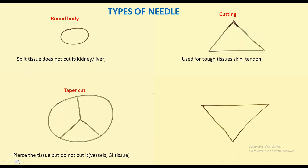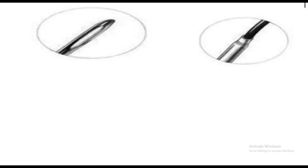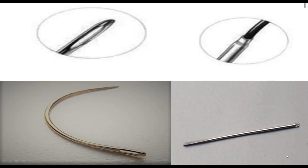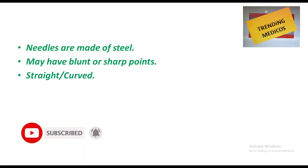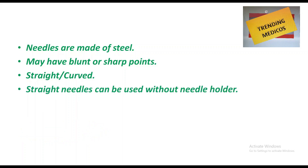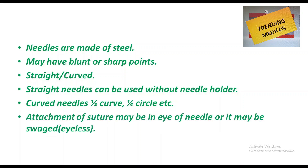On cross section, needle types include: round body, which splits tissue without cutting and is used in kidney and liver; cutting, used for tough tissue like skin and tendon; taper cut, where the needle pierces but does not cut tissue and is used in vessels and GI tissues; and reverse cutting, which is the opposite of cutting.